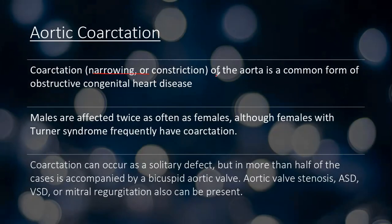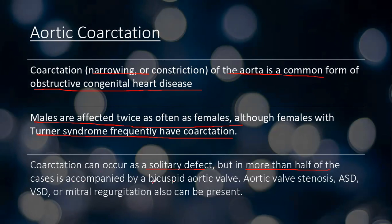Coarctation of the aorta is simply a narrowing or constriction of the aorta. It is a common form of obstructive congenital heart disease. Males are affected twice as often as females, but females with Turner syndrome — karyotype XO — frequently have coarctation. Coarctation can occur as a solitary defect, but in more than 50 percent of cases it is usually accompanied by a bicuspid aortic valve.